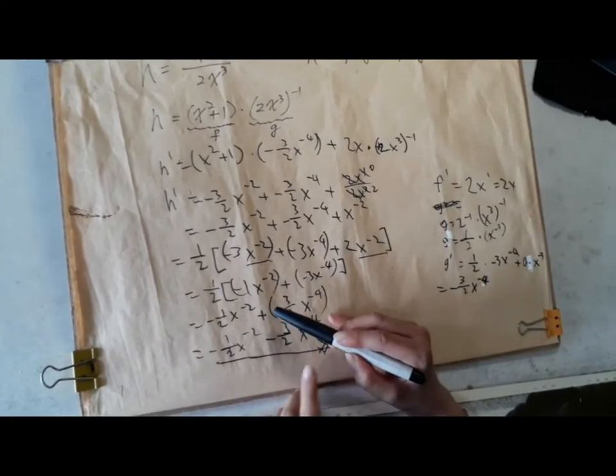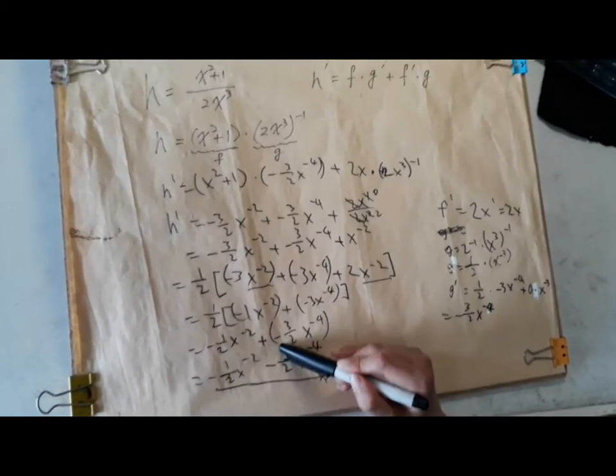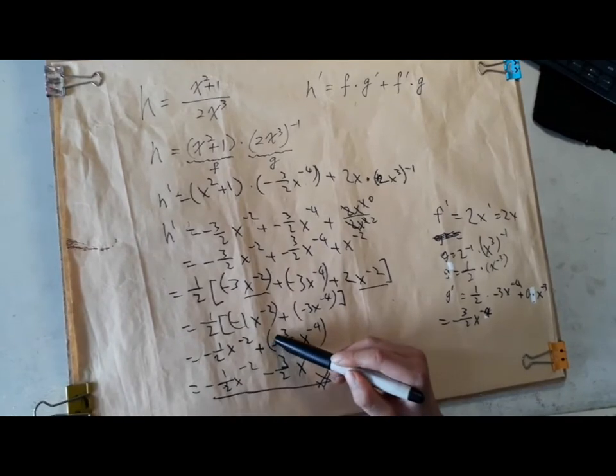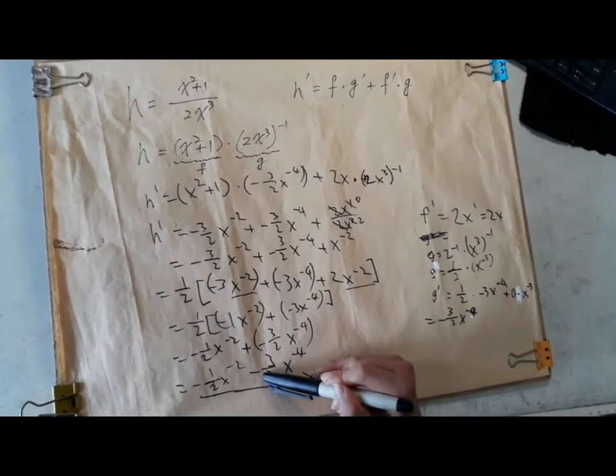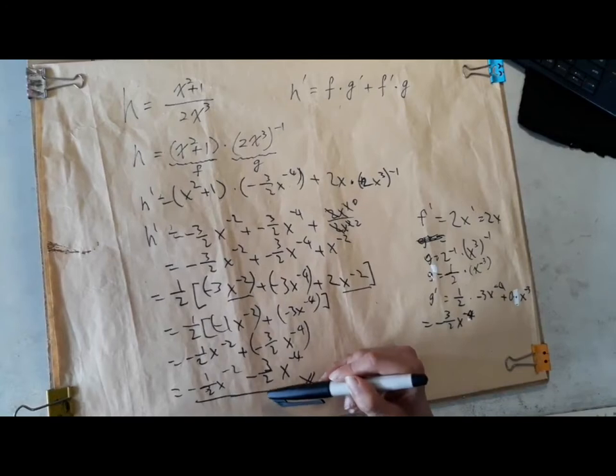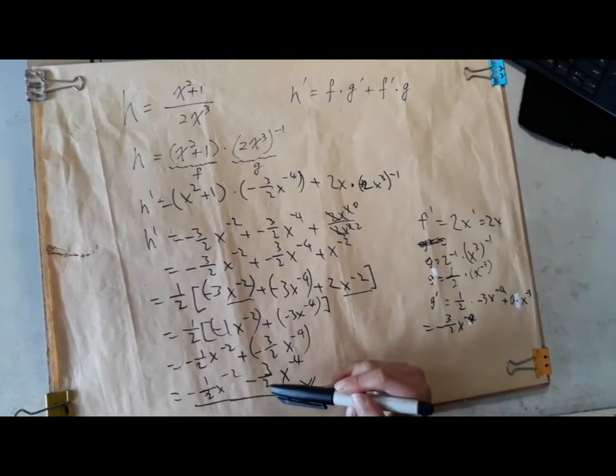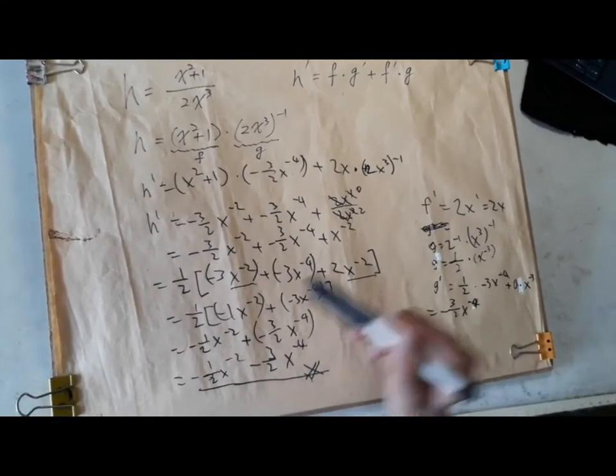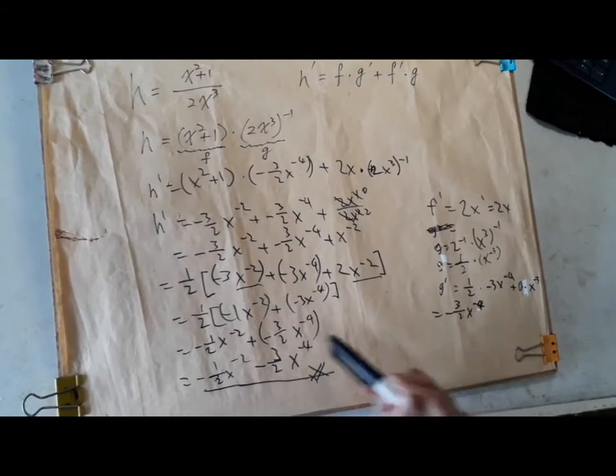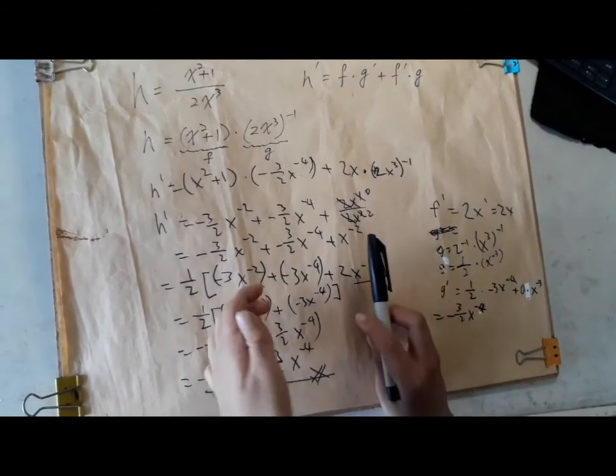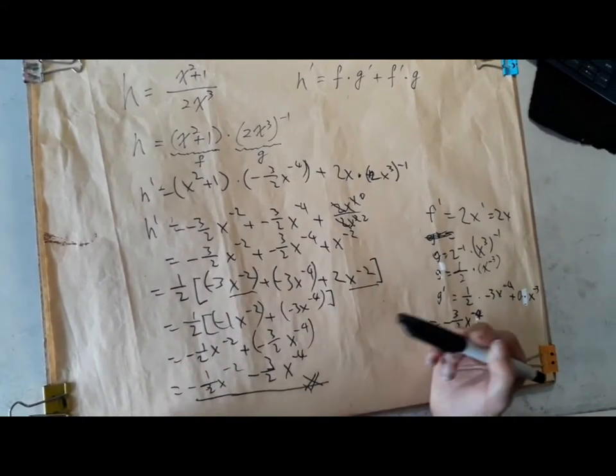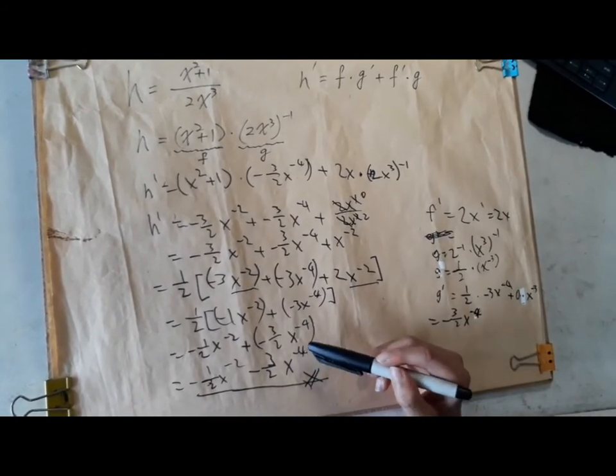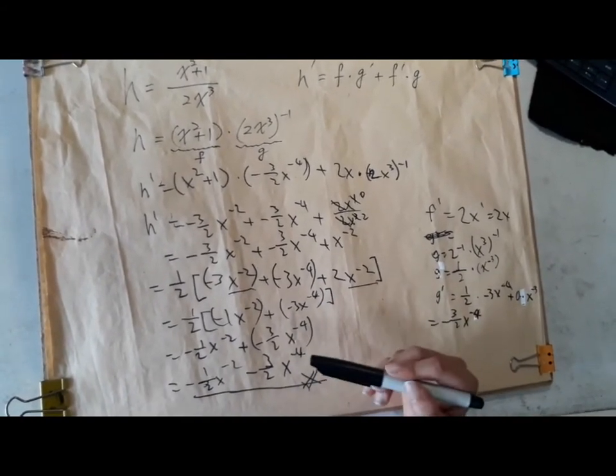But the thing is, if you add a negative number, it's the same as subtracting the positive version of that number. And we write positive numbers, we don't write plus 5, we just write 5. And so we can actually just remove the plus, and there we have it.